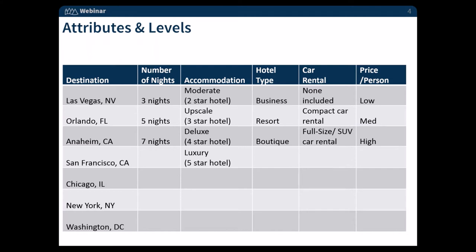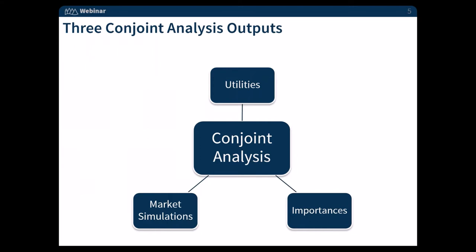Some more detail about the exercise itself: we have seven different destinations from the East Coast to the West, a different number of nights — three, five, and seven — different types of accommodations with star ratings, different hotel types, whether a car rental is included in the fee or not, and a price per person. Low, medium, and high are kind of generic prices because price is going to be conditional upon the number of nights in this study — something important that we'll see when we get to the results.